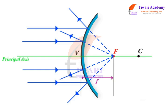As is easily demonstrated in the paraxial approximation, the focal length of a convex mirror is half of its radius of curvature.